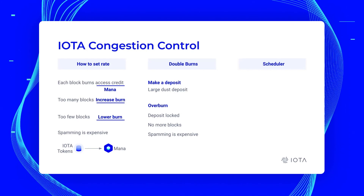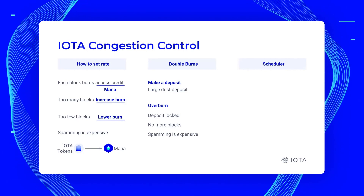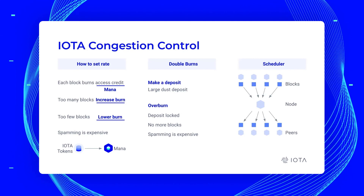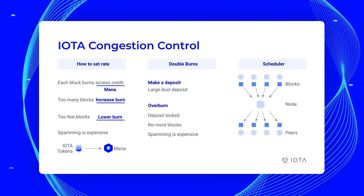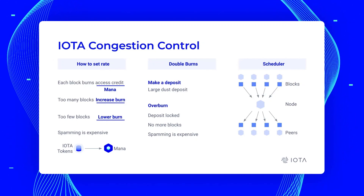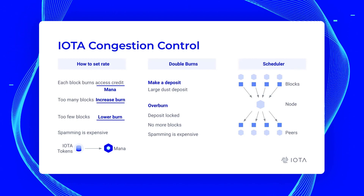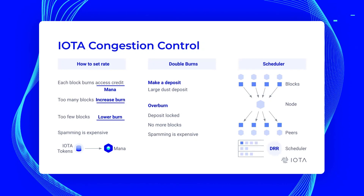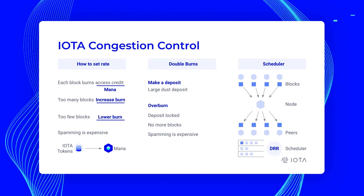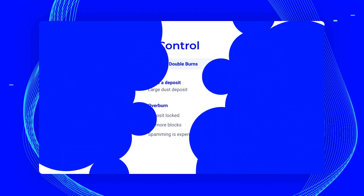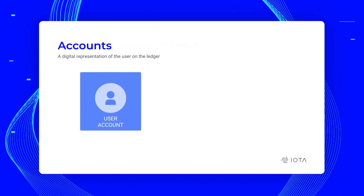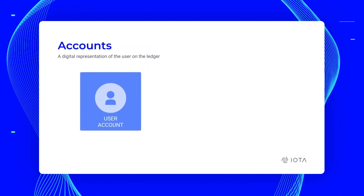We have all these blocks being created and gossiped around the network. We have to manage these blocks and have some sort of rule for the gossip. As a node, you have all your neighboring nodes — you receive blocks, process them, and then choose which blocks to pass on to all of your peers. We use the deficit round-robin schedule: you line up all the blocks into queues, then take some blocks from one user and schedule them, then take some from another user. How do we actually represent the user on the ledger? It's via accounts — the user has an account on the ledger, and that's how they access the protocol. They can issue blocks, hold funds, and manage their IDs.